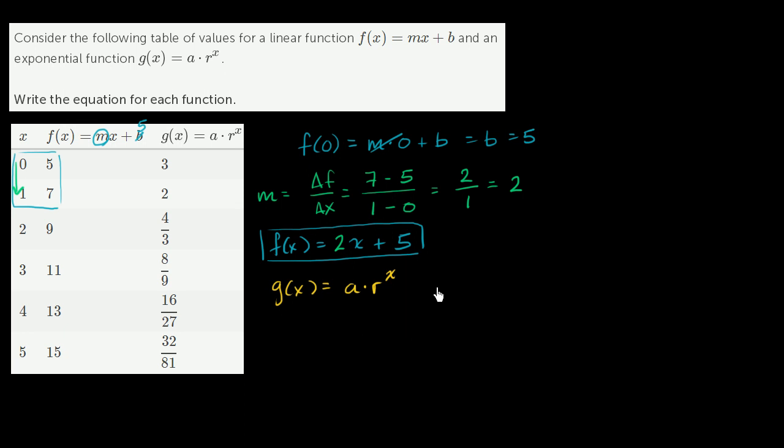Let's write that down. g(0) is a times r to the 0 power, which is just going to be equal to a times 1, or a. They tell us what g(0) is: g(0) is equal to 3. So we know that a is equal to 3. So far we know that our g(x) can be written as 3 times r to the x power.